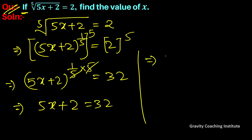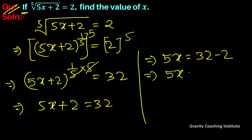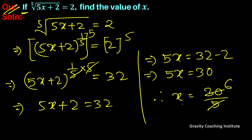This implies that 5x = 32 minus 2, so 5x = 30. Therefore, x = 30 divided by 5, which gives x = 6.